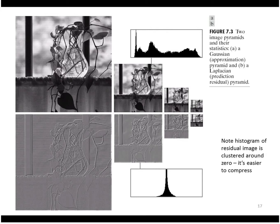This is an image of a Laplacian pyramid and the Gaussian pyramid. These are the residuals between every image and its expanded approximation. The difference between an image blown up to the original size minus the approximation gives us these residual images, which are effectively the Laplacian of a Gaussian.